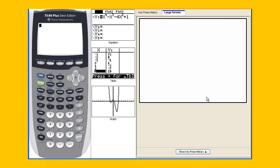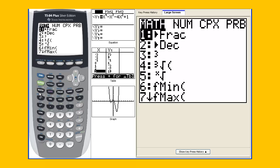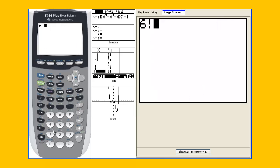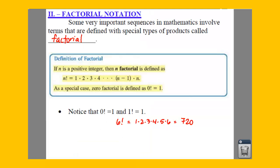So this factorial button can be found under your math button. If you type in 6, hit your math button, you get this menu. You have math, complex, probability. So we're going to go to the right to the PRB, and if you look down at number 4, there's an exclamation point. So if you hit 4, it throws your exclamation point behind there. You hit enter, 720, just like I said. Calculators are so nice.